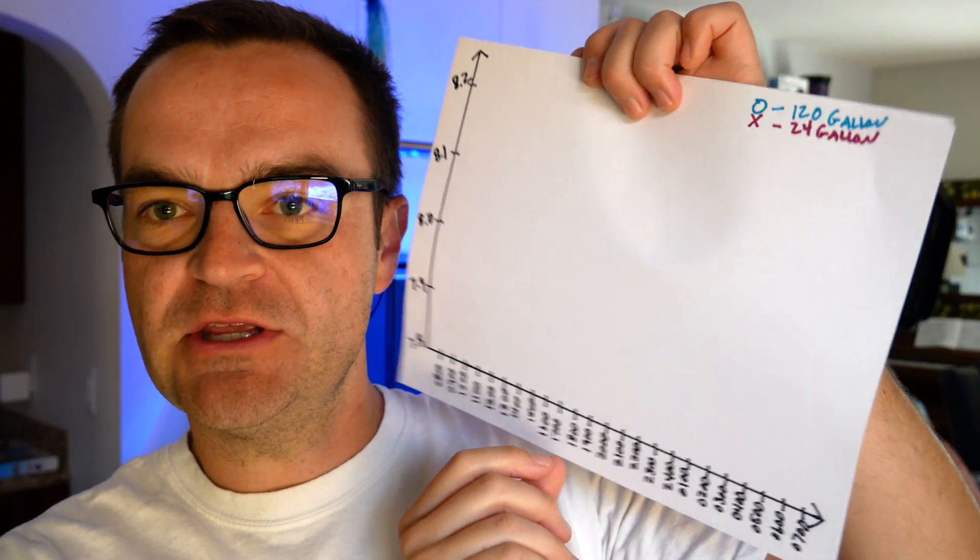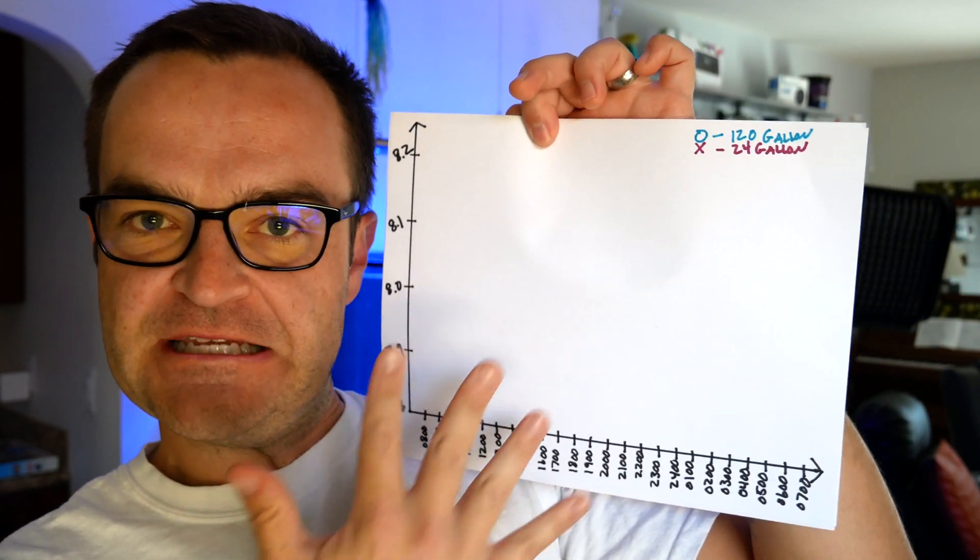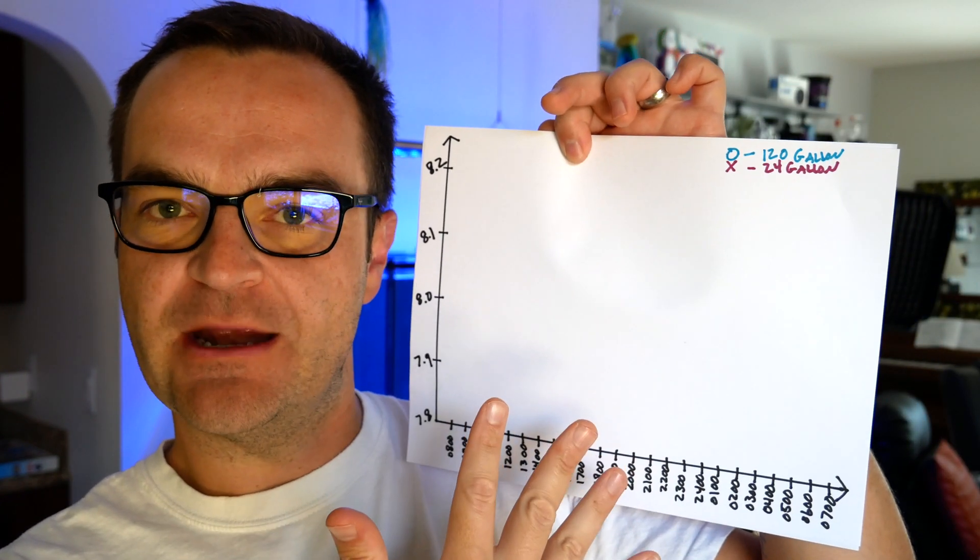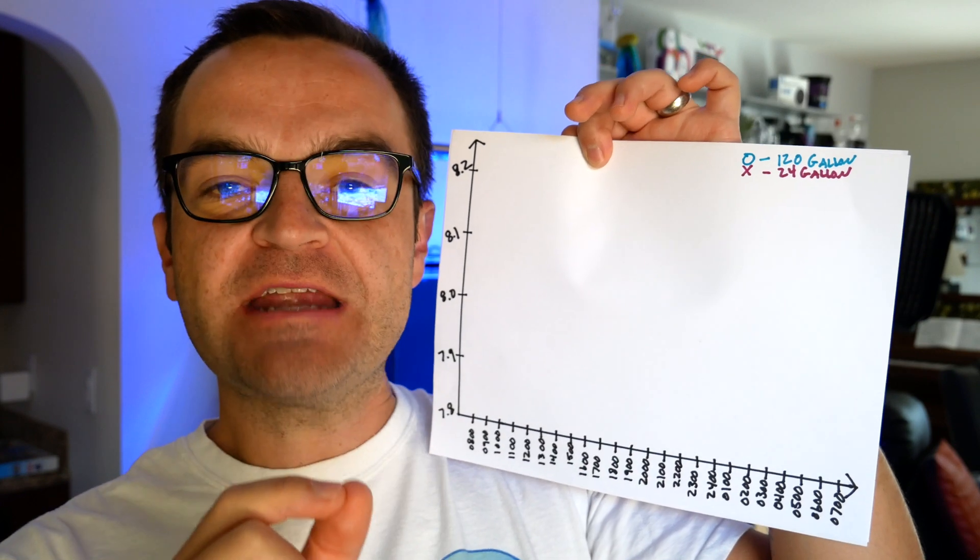First up, we're going to be using this fancy hand-drawn chart and we're going to do a test every hour on the hour of both the 120 gallon and the 24 gallon reef tank.